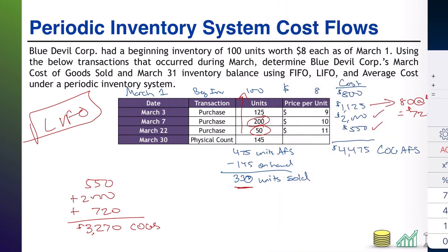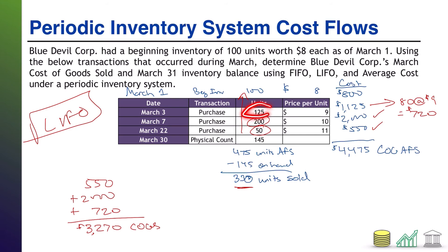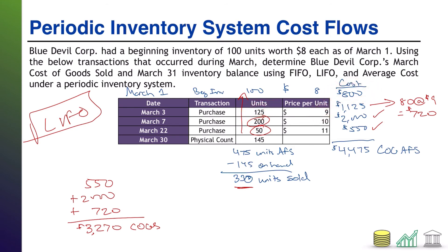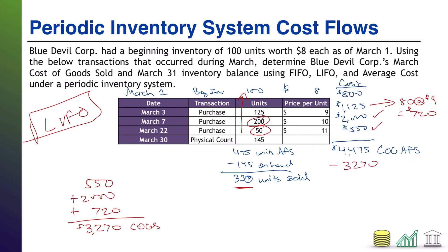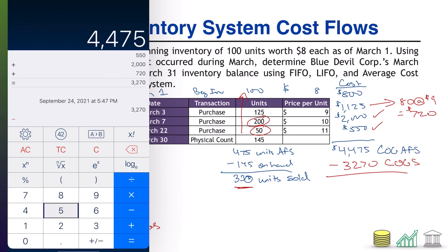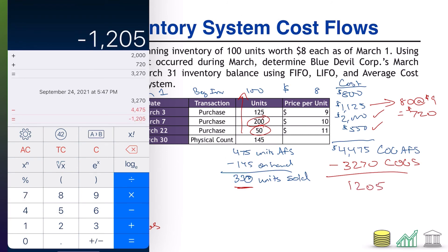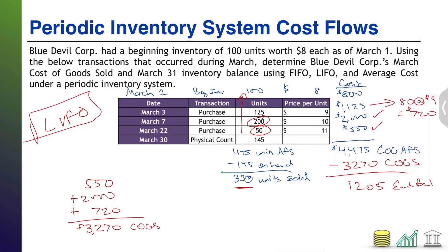Again, we have to figure out ending inventory. We could grab the remaining units from that batch at $9 each and add them to the beginning inventory batch, since that's assumed to still be there. But just like with FIFO, we know what we had available for sale. We now calculated what we sold. The difference between $4,475 and $3,270 is $1,205 — that's our LIFO ending inventory. And that's LIFO.